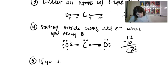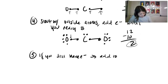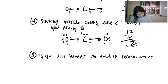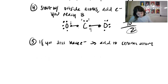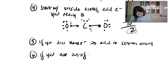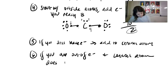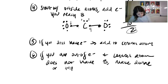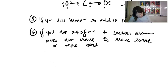Step six: if you are out of electrons and the central atom does not have eight, make a double or triple bond. Let me redraw what we have for CO2 to check.